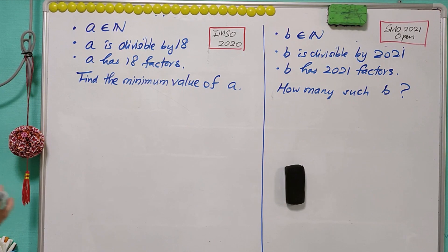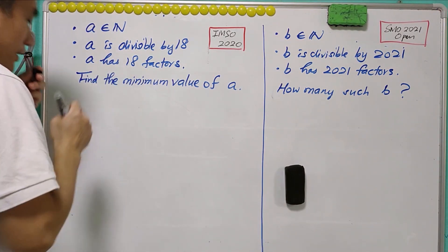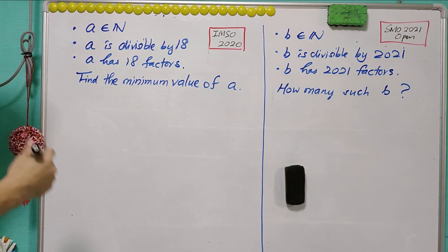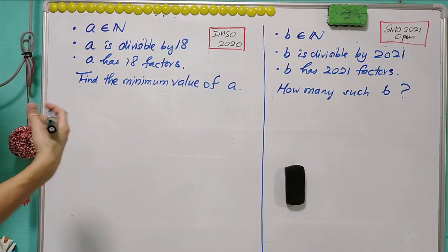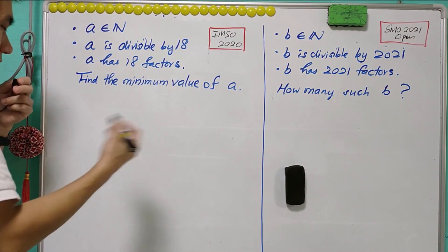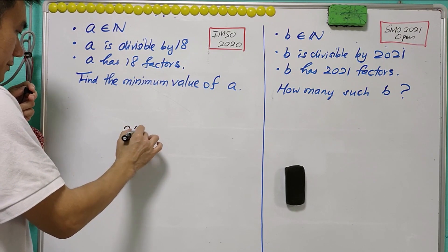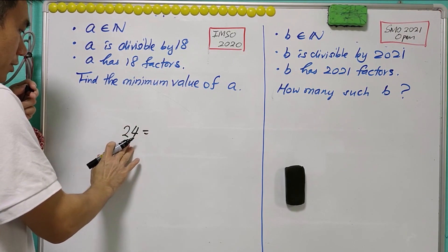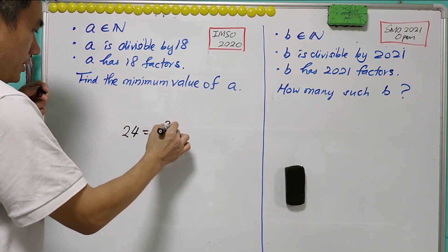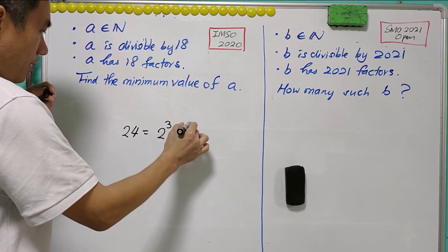One of the main ideas is to calculate the number of factors. To calculate the number of factors, first we need to write the number into a prime factorization. Let's take the number 24: 24 is 3 times 8, that is 2 to the power of 3, times 3 to the power of 1.